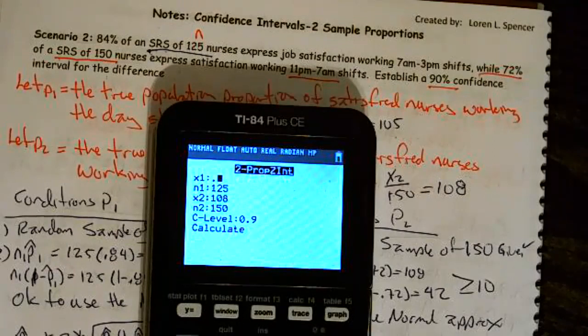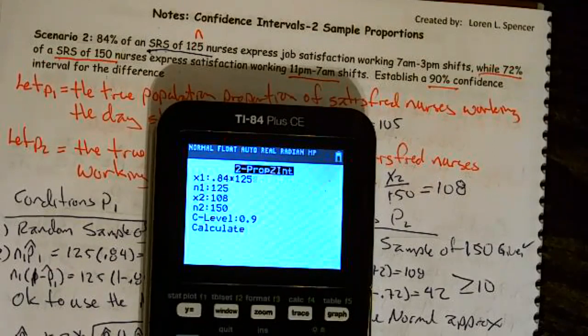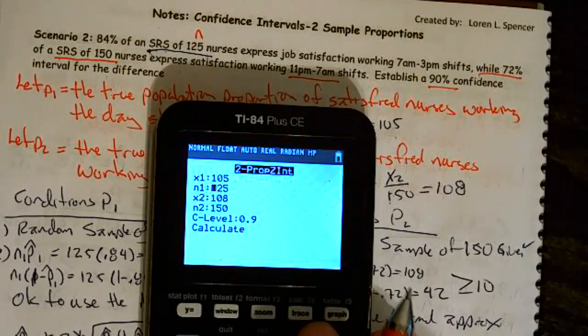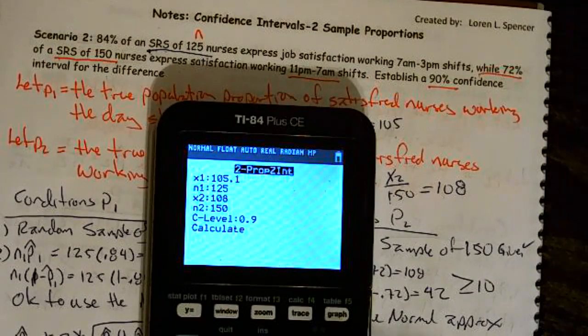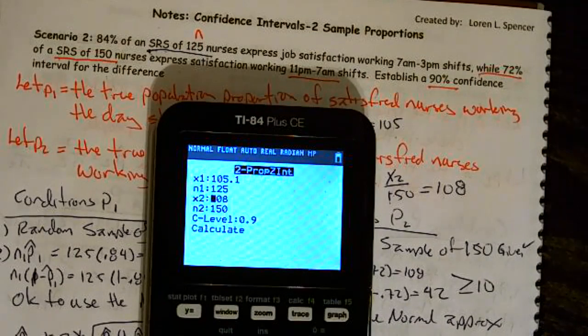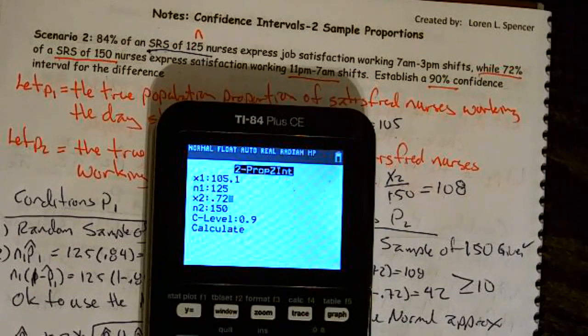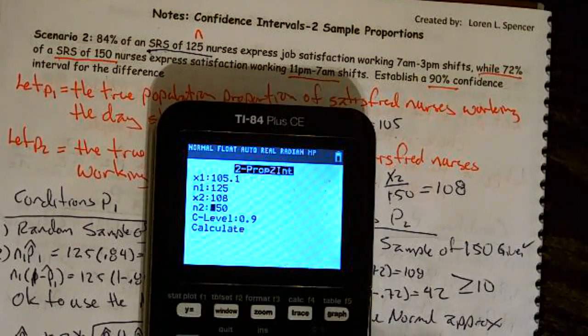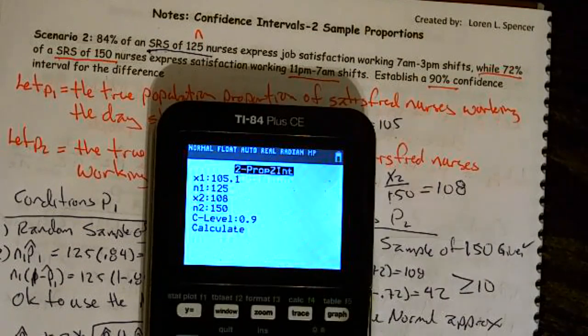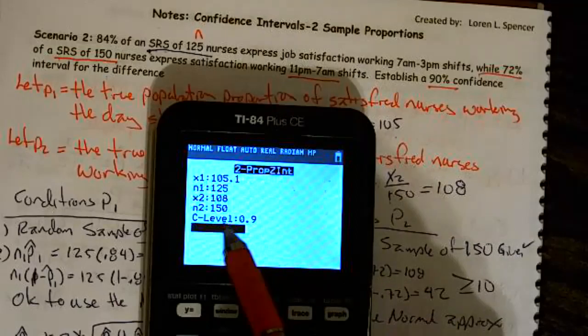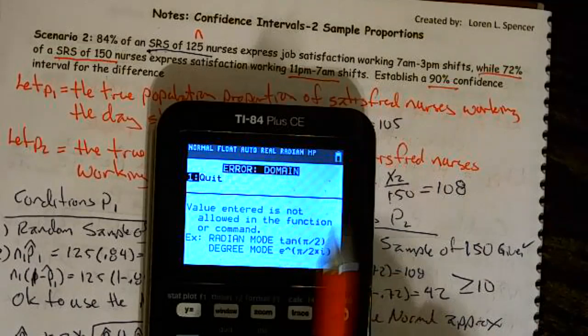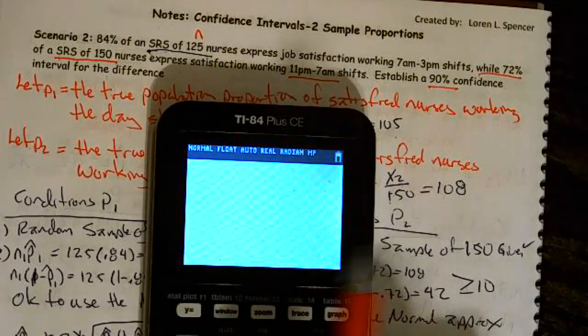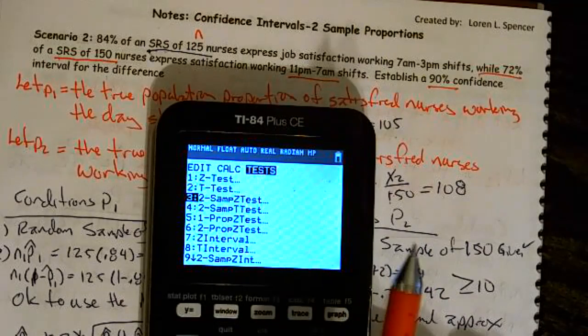I'm going to go ahead and do 0.84 times 125. And I get a whole number. Let's just say it was a decimal, 105.1. I just made it a decimal just for fun, even though it wasn't. And let's just say X2. I multiplied it out. I went 0.72 times the 150. Oh, I got a nice whole number. I left it there. And I confidence level. Here's what happens if you have a decimal anywhere up there other than the confidence level. It gives you an error. And you have no idea what it's talking about. Radians and degrees. Nothing. Doesn't make sense. So, if you multiply and you end up with a decimal, you're going to have to round.